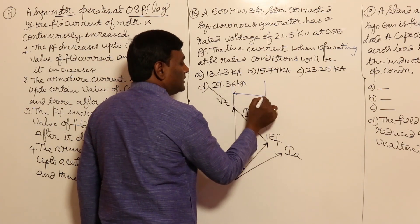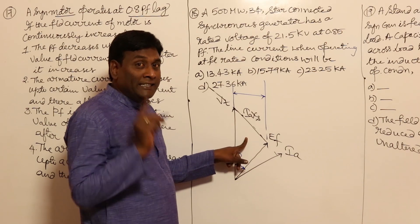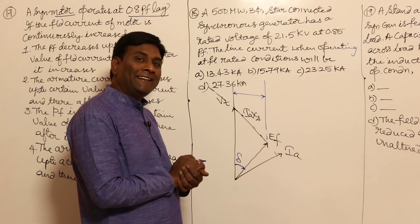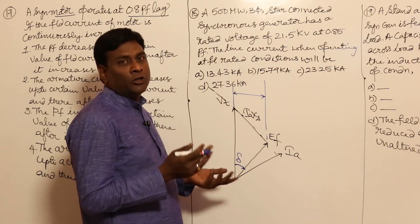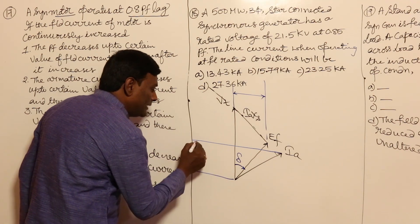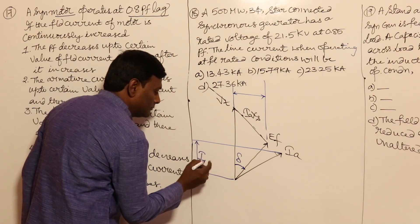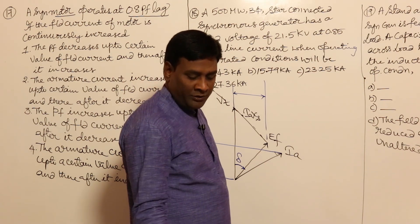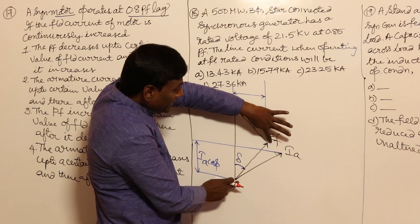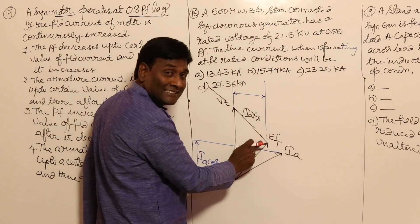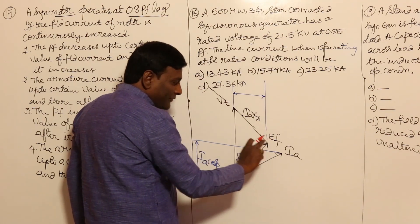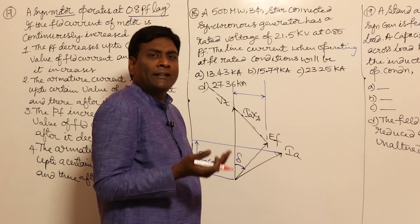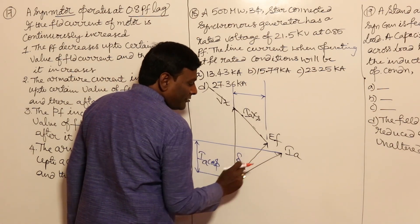When active power is constant, Ef sin δ is constant. Also, Vt × Ia cos φ is active power, so Ia cos φ must be constant. Now, in the under-excited condition: Ef cos δ − Vt is negative, meaning it is absorbing reactive power. If we increase field current, the length of Ef should increase.